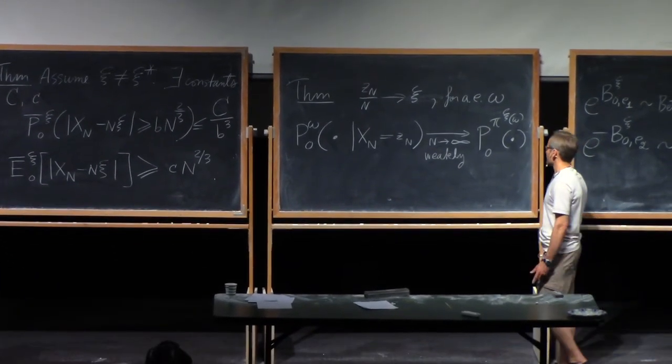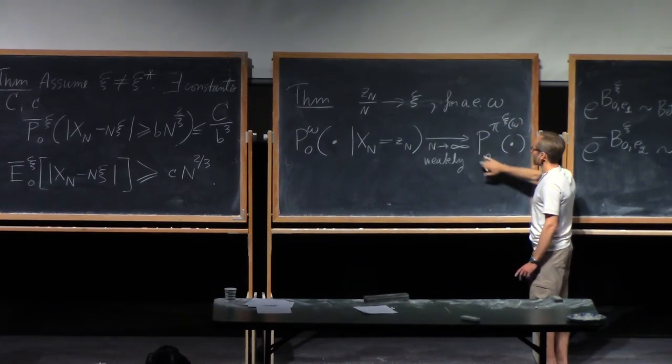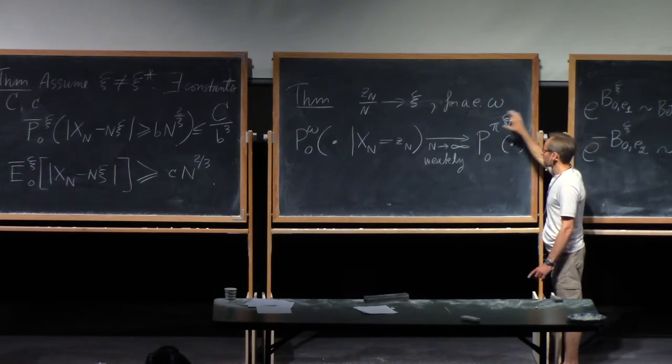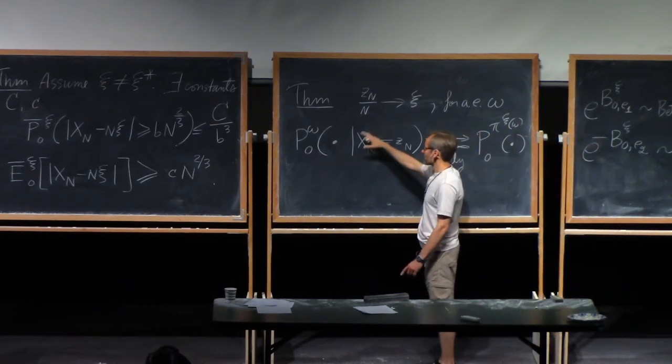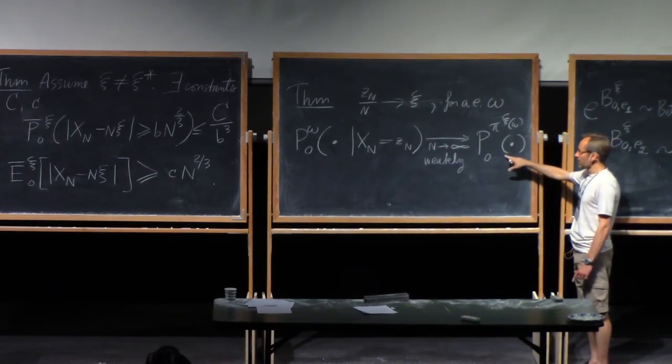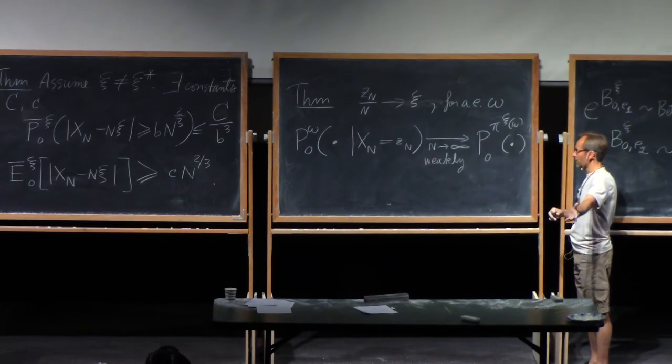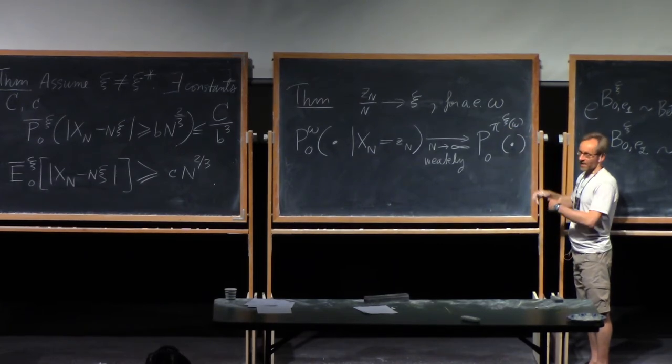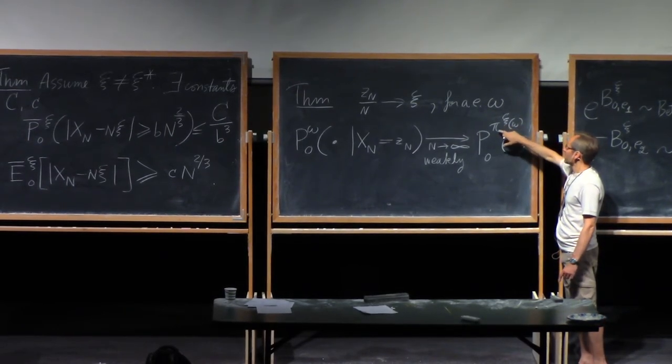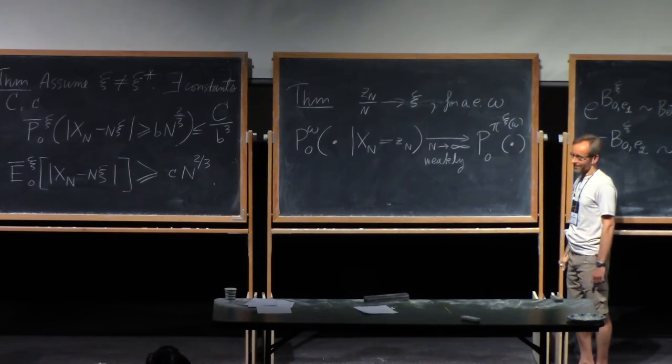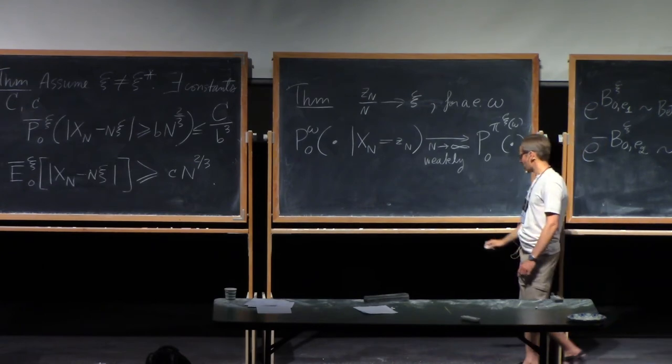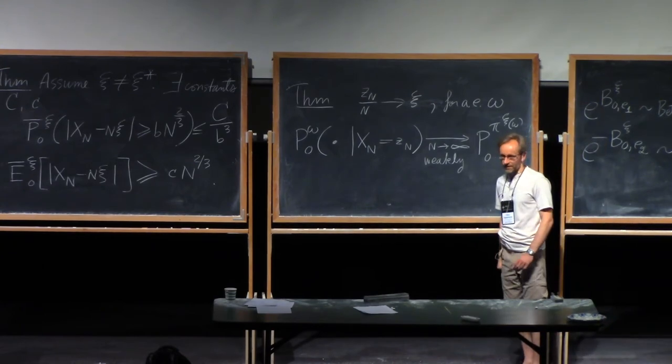And this family of transformed measures is sort of closed under this conditioning now. In other words, if I take this guy now, and I condition that to go into another direction, not that same Xi, but something else, anything, I get the corresponding thing with the pi zeta or whatever up there. So in that sense, it all fits nicely together. Okay, I think that's a good place to stop, so thanks very much for your attention.